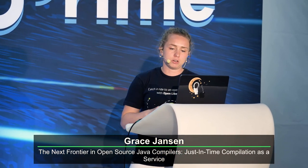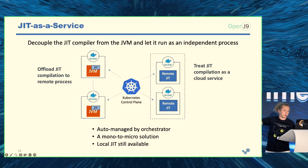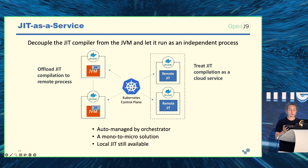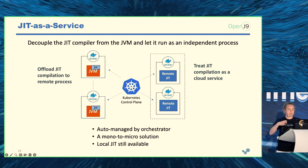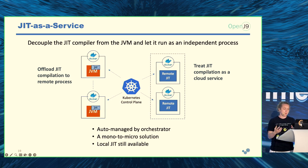The remote JIT servers are containerized and made available as a cloud service, managed by orchestrators like Kubernetes - ensuring the service is always running and scaled to handle demand. This solution is essentially like using the Strangler pattern to strangle out different microservices from a monolith, except here we're strangling out the JIT from the JVM as a microservice.